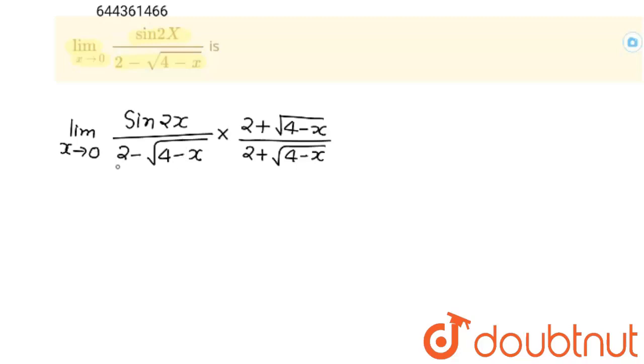Now denominator is a minus b a plus b, so this will become a square minus b square. This is 2 squared 4 minus square root of 4 minus x, square of square root 4 minus x, minus will go inside, this calculation will become x.